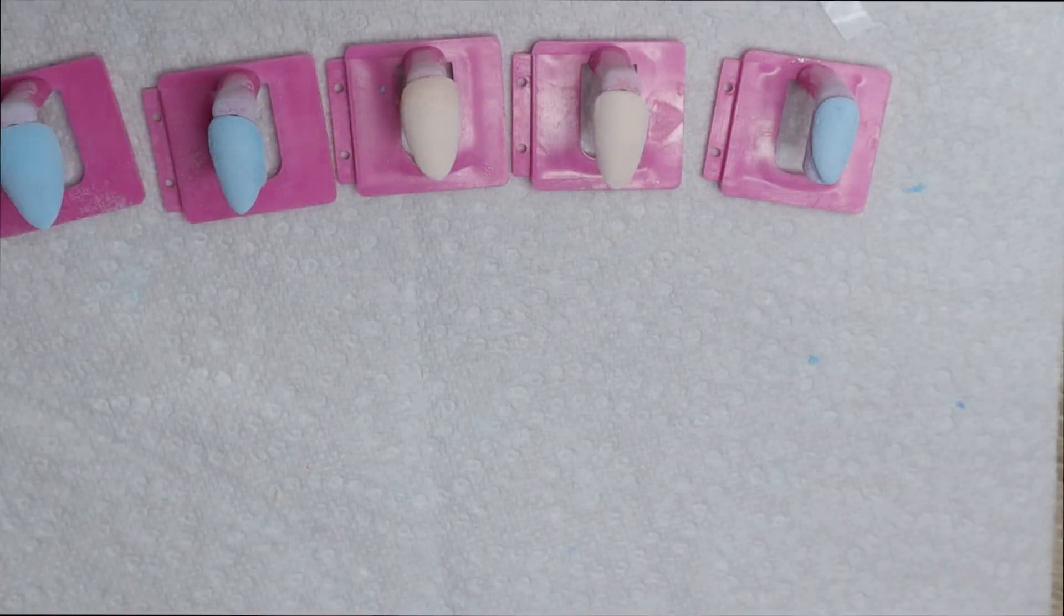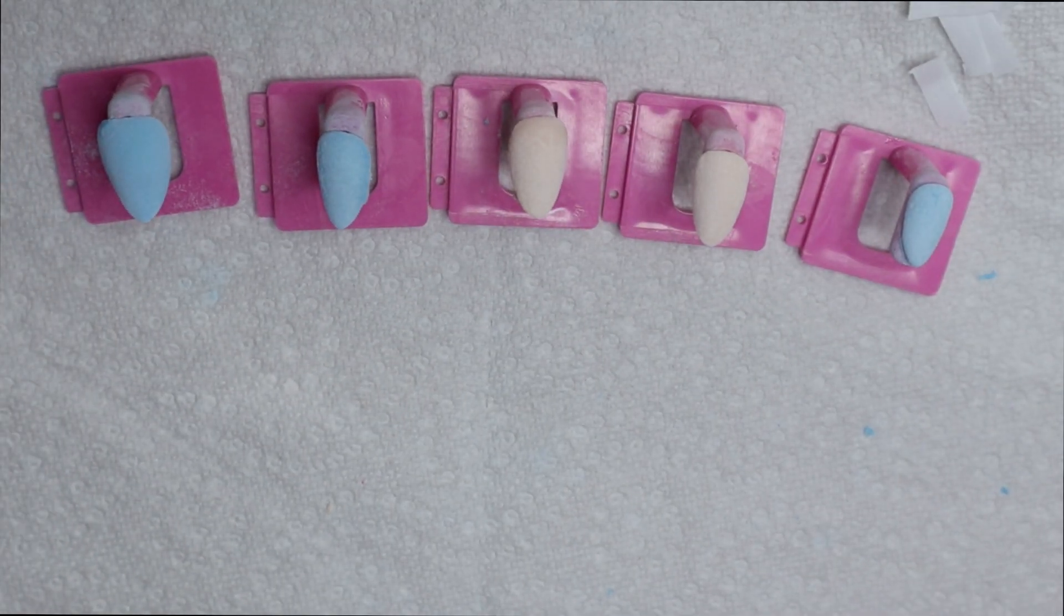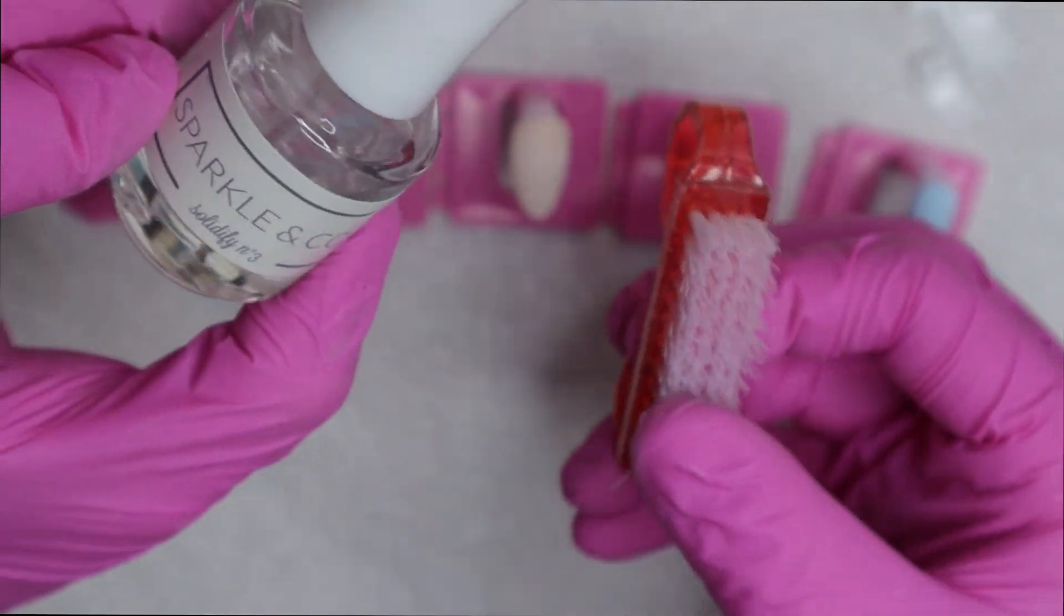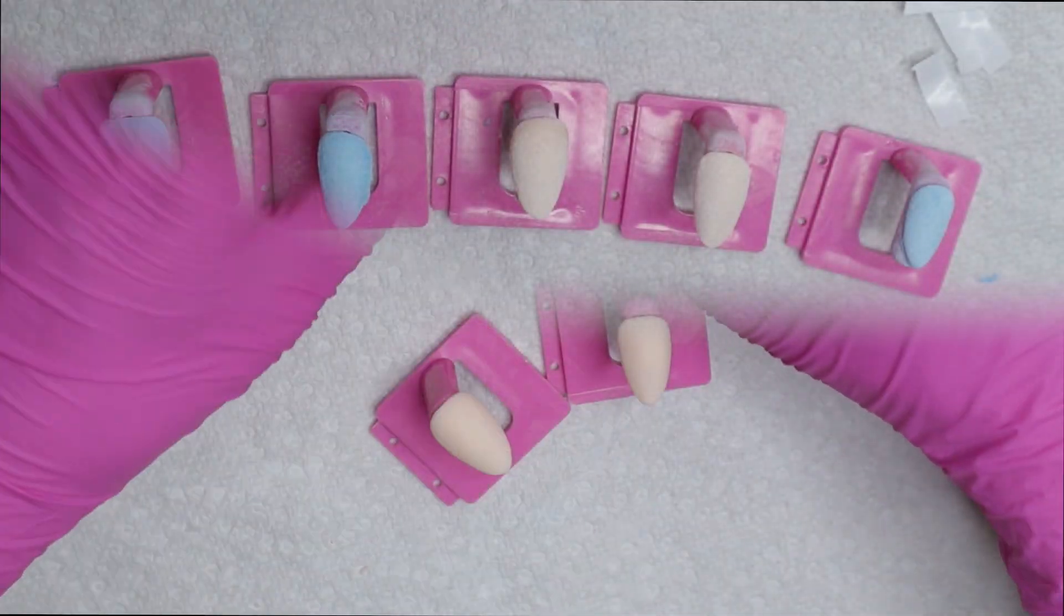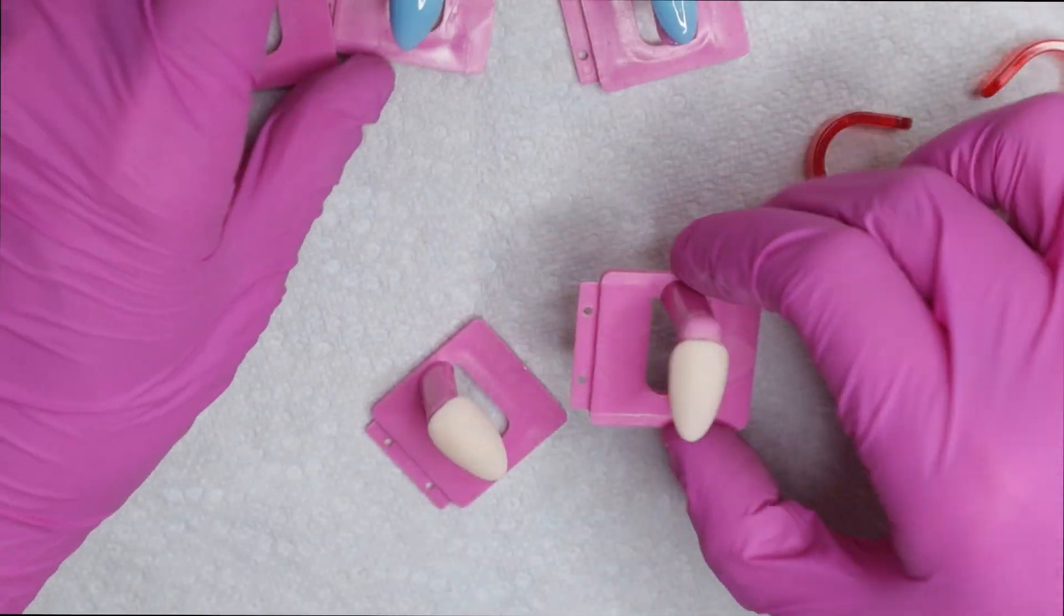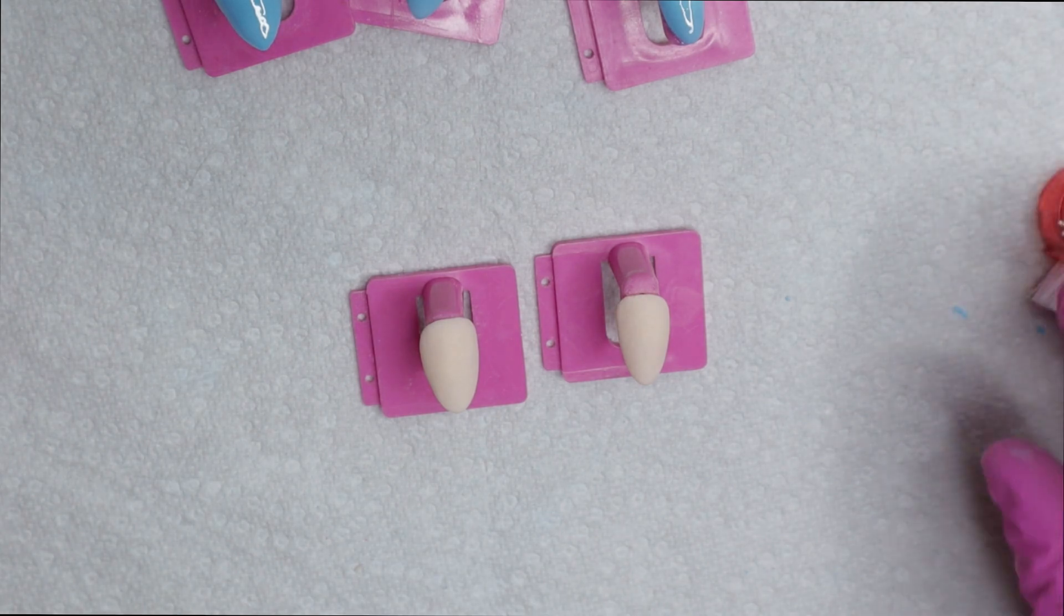So I'm done dipping. Now I need to dust everything off and apply activator, so the step two that hardens the dip powder, and then file, shape, and buff, which I will be doing off camera. So here are the blue ones, all done, and they are top coated as well. The nude ones I'm going to be doing some nail art on them.